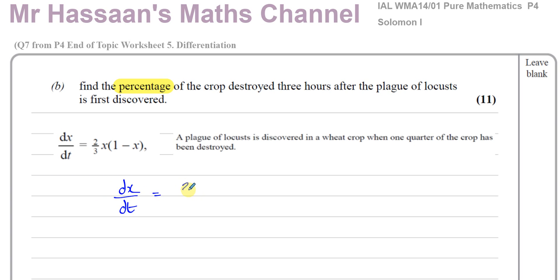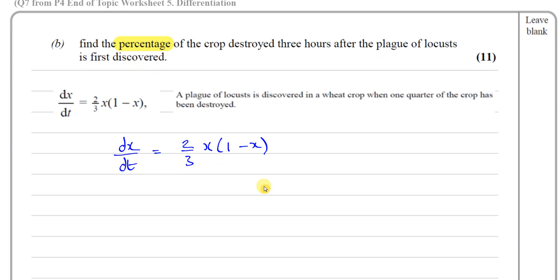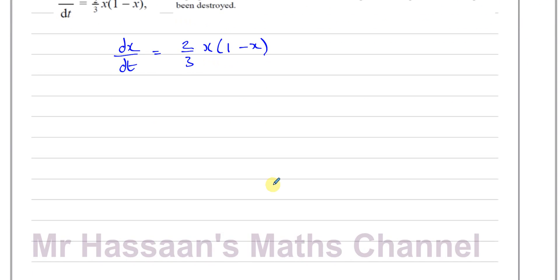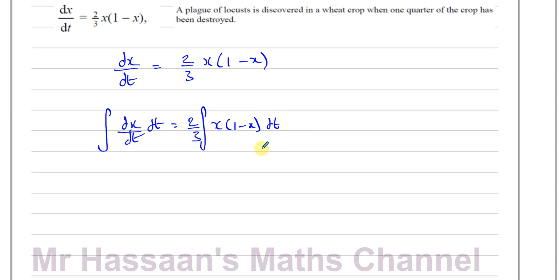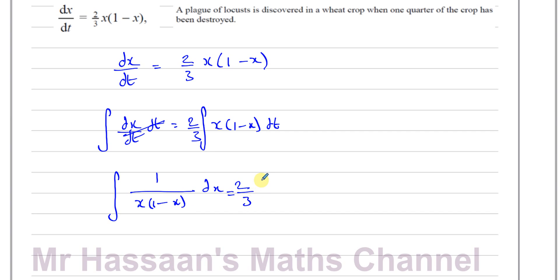To solve this differential equation dx/dt = (2/3)x(1 minus x), we integrate both sides with respect to t. The dt terms cancel, giving us the integral of 1/(x(1 minus x)) dx on the left equals (2/3) times the integral of 1 dt on the right. I'll put limits in now: x goes from 1/4 to x, and t goes from 0 to 3.